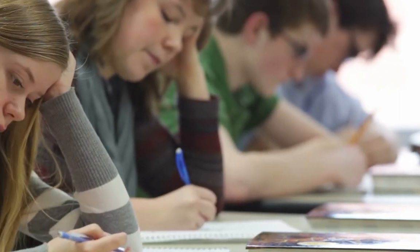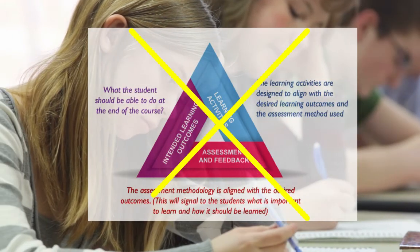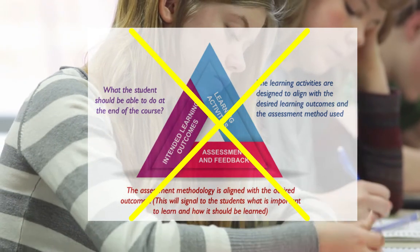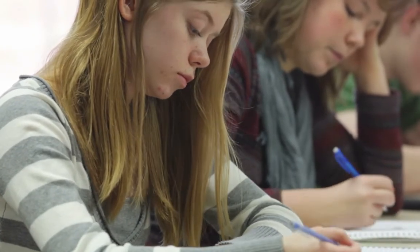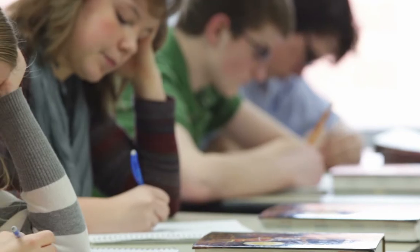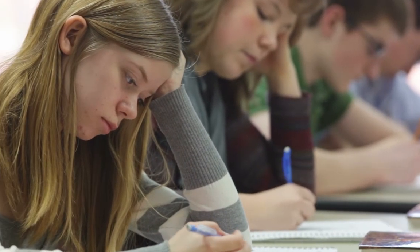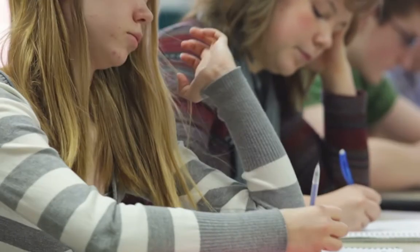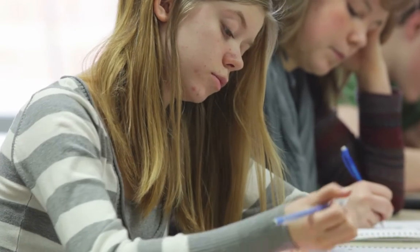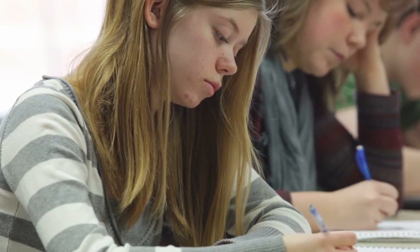Consider, for example, sitting an exam and when you see the first question, you realize it bears no resemblance to the learning that you have been directed to within the course. This misalignment, or poor linkage, of the three core elements encourages students to learn simply for an assessment, rather than engaging with the full curriculum and investing themselves in the learning activities. In a similar way, if students are not able to see a direct link between their learning activities and the assessment, then they may be less motivated to undertake the learning.